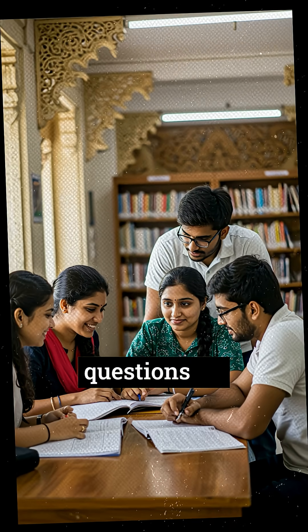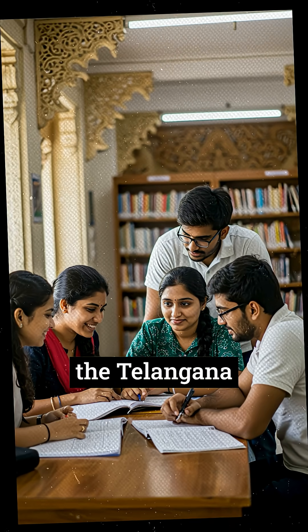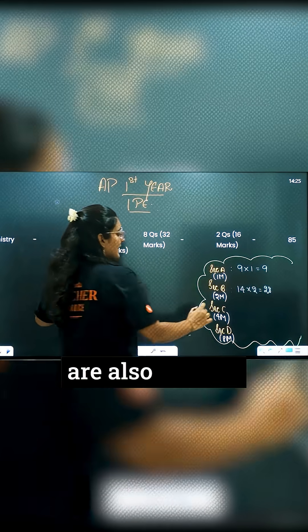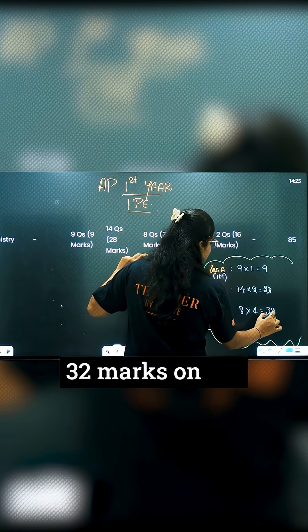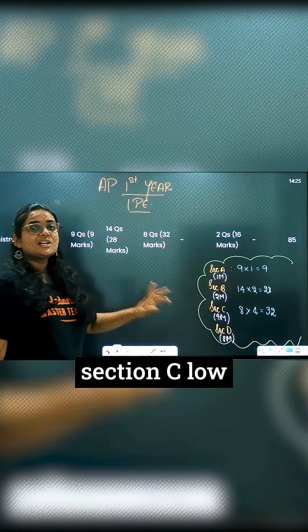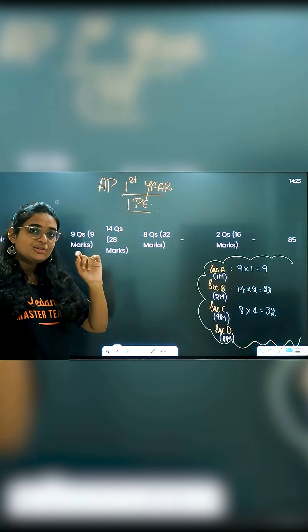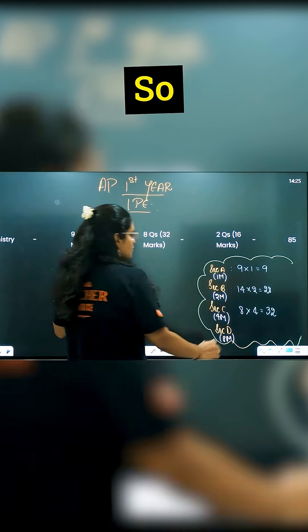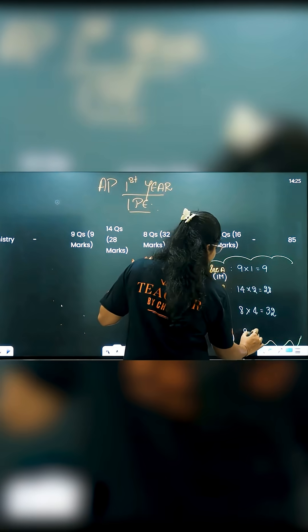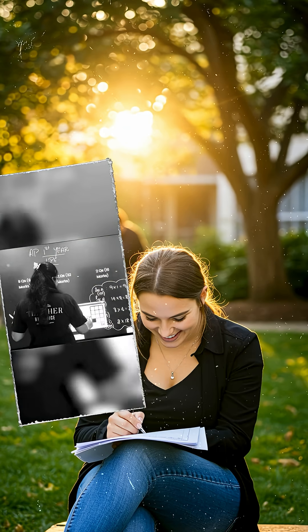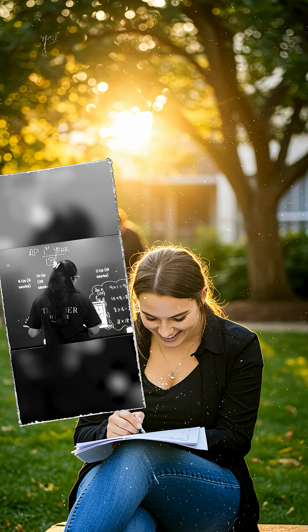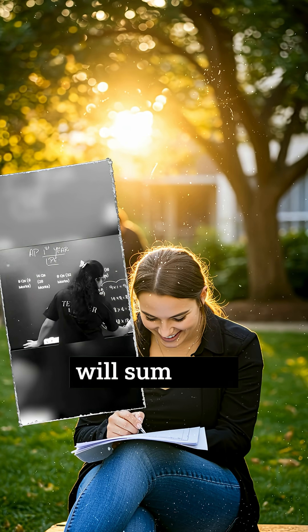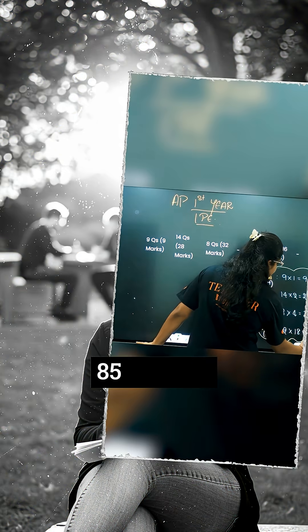Section C has 8 questions. Telangana has just 6 questions, but here you have 8 questions. So Section C is 8 into 4, equals 32 marks. In Section D, there are only 2 questions, so 2 into 8 equals 16 marks. This all sums up to 85 marks.